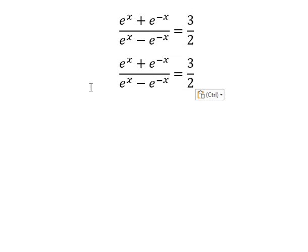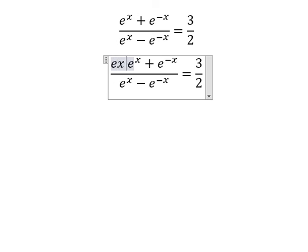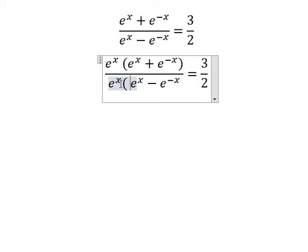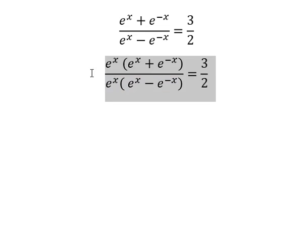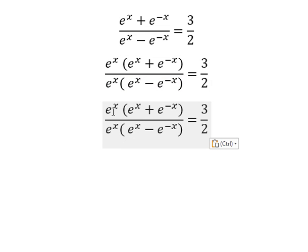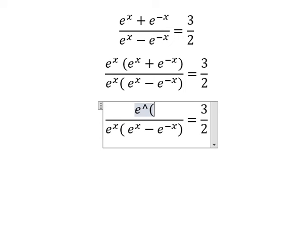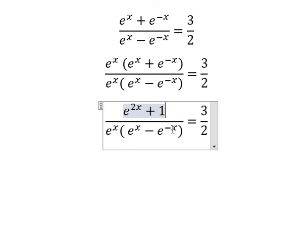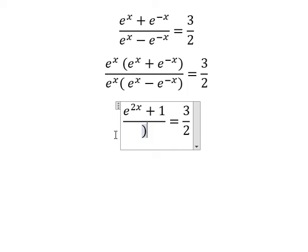We need to multiply by e to the power of x on numerator and denominator. So e to the power of x multiplied by e to the power of x and e to the power of negative x. We have e to the power of 2x plus 1. This one we have e to the power of 2x minus 1.